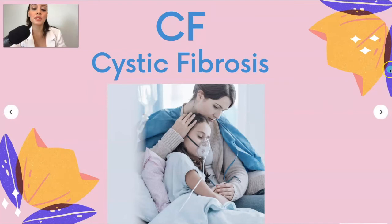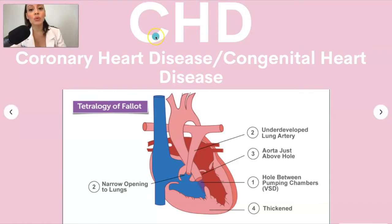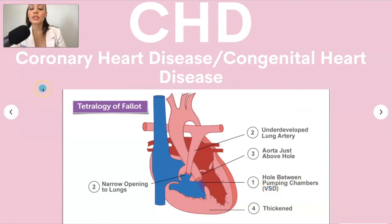CHD could stand for coronary heart disease or congenital heart disease, which is why it's important to be careful with abbreviations — people could misinterpret what you meant. If you're on a pediatric or neonatal floor, they're more likely referring to congenital heart disease since you're dealing with babies. Tetralogy of Fallot is one of those congenital heart disease conditions where children are born with four heart defects. Always ask if you're not sure which one is meant.